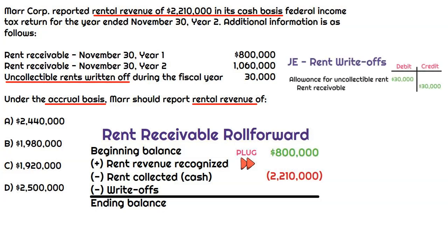How do we treat write-offs? Let's look at the journal entry that the company would record to write off uncollectible rent. They would have established an allowance for uncollectible rent. When you go to write off uncollectible rent, it's the same as writing off accounts receivable — we would debit the allowance for uncollectible rent, and then credit rent receivable because we're fully removing that rent receivable amount since we've determined it's no longer collectible. So there's a credit to rent receivable for $30,000, which is why it's a negative amount in our rent receivable roll forward.